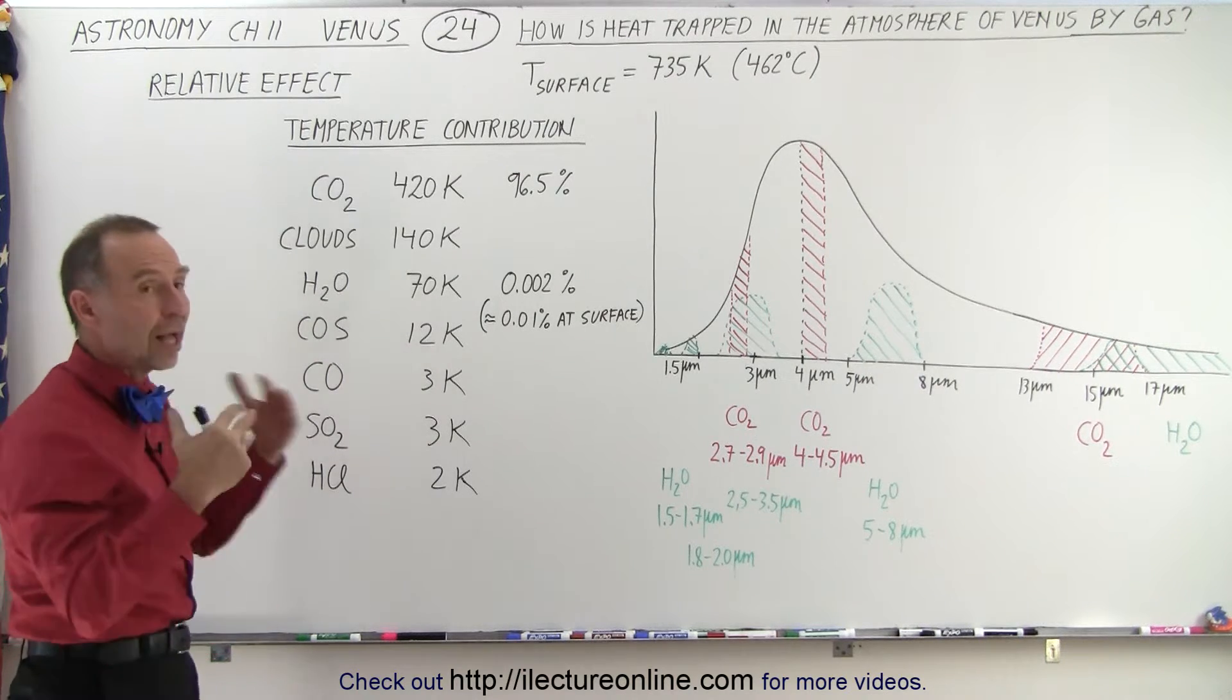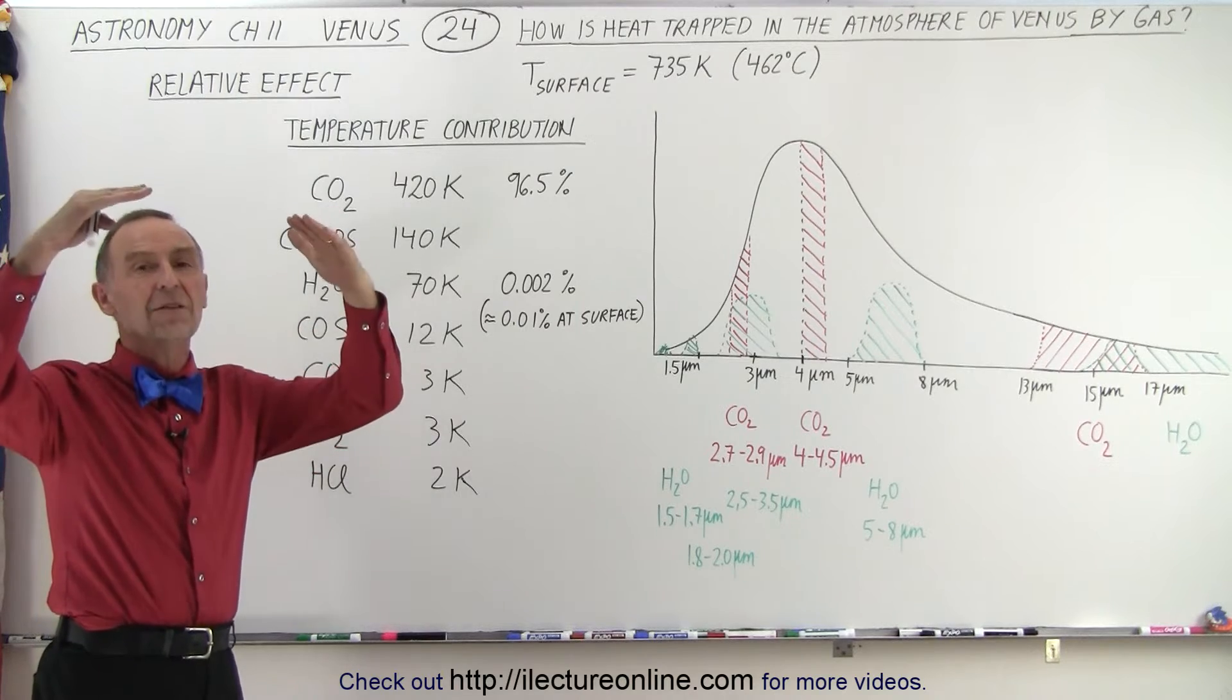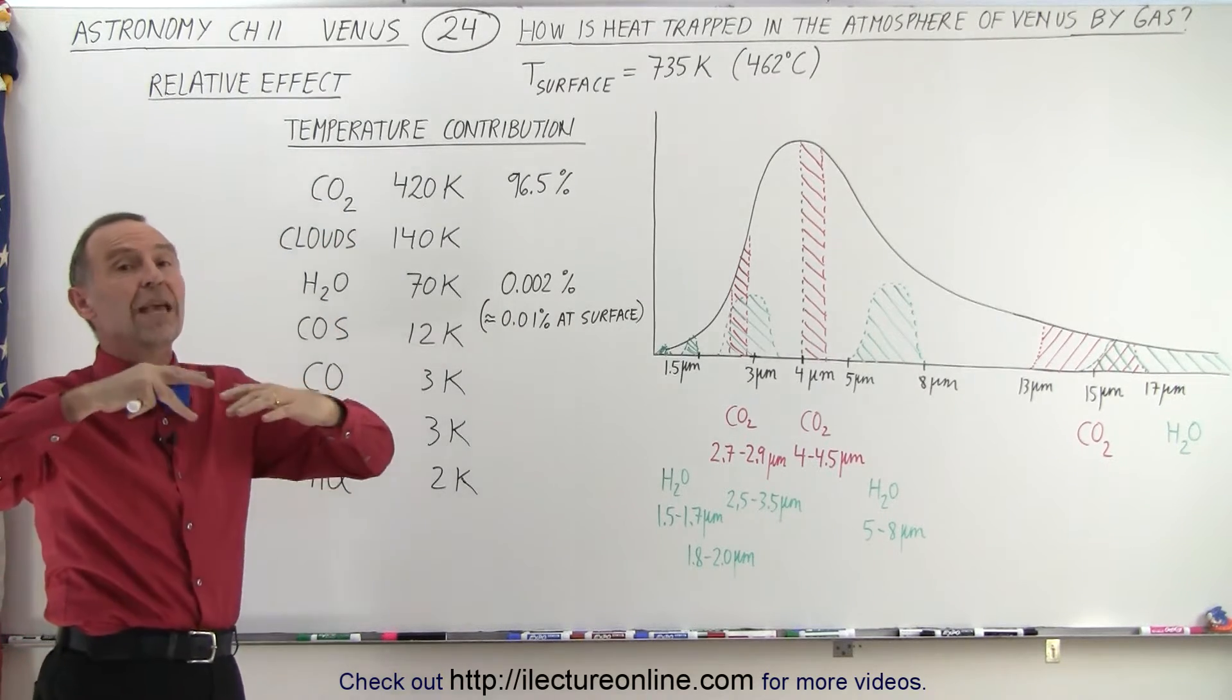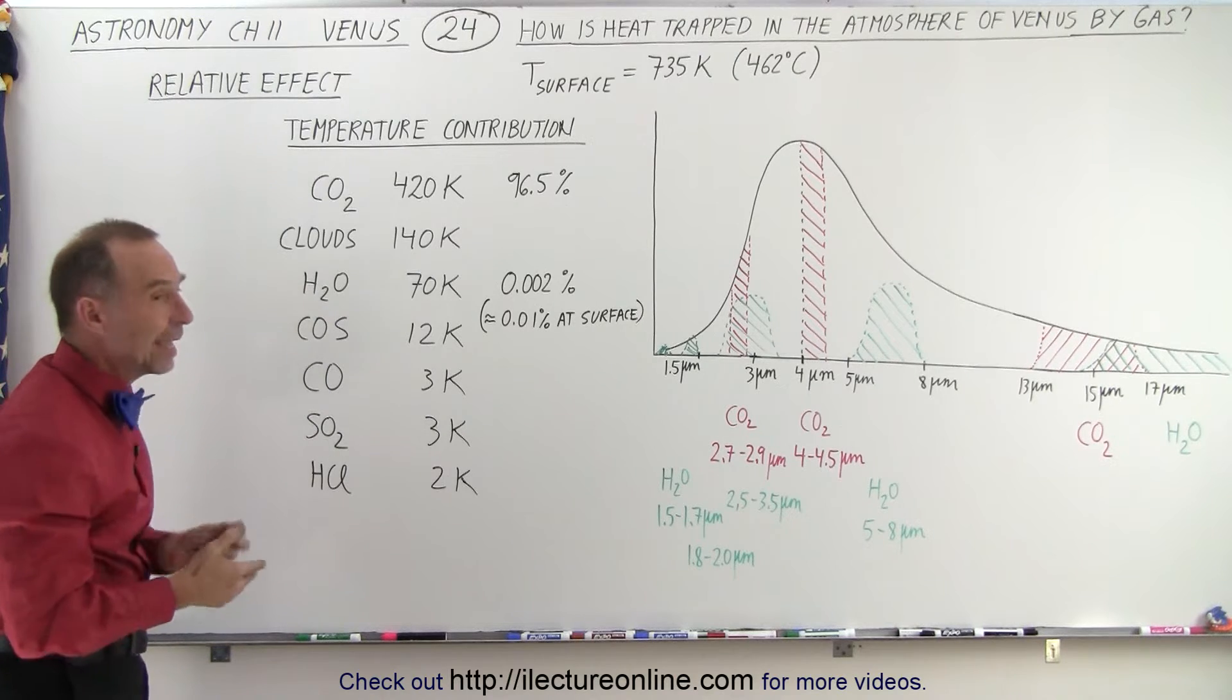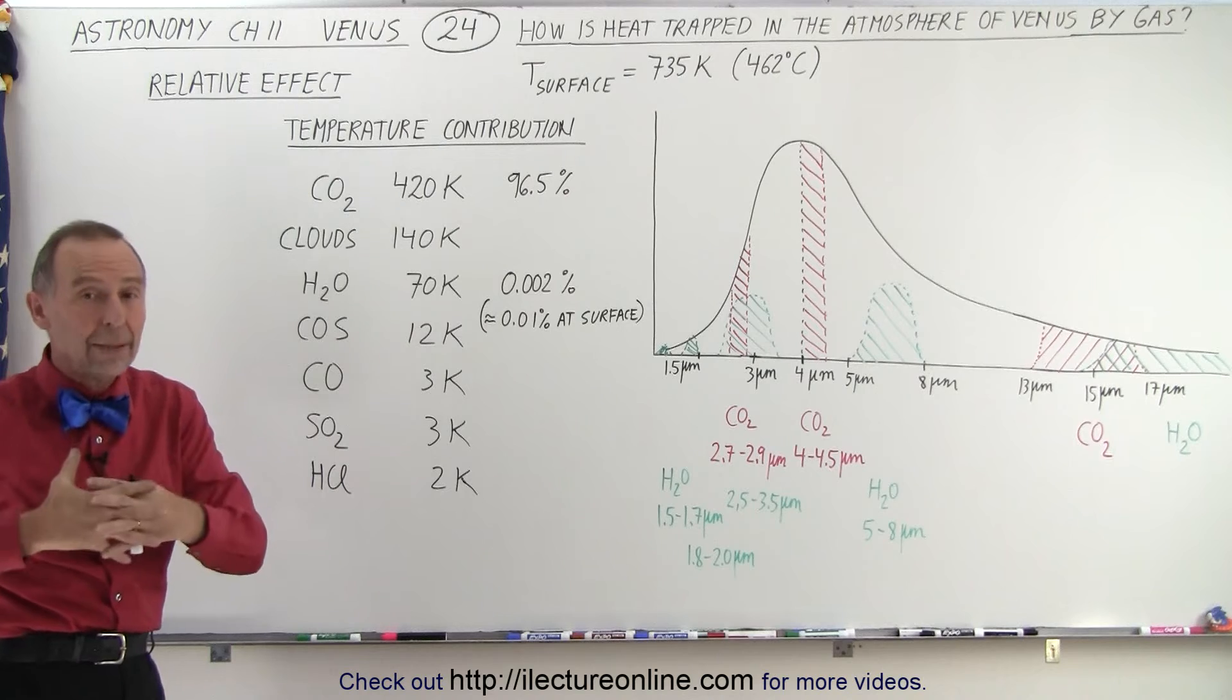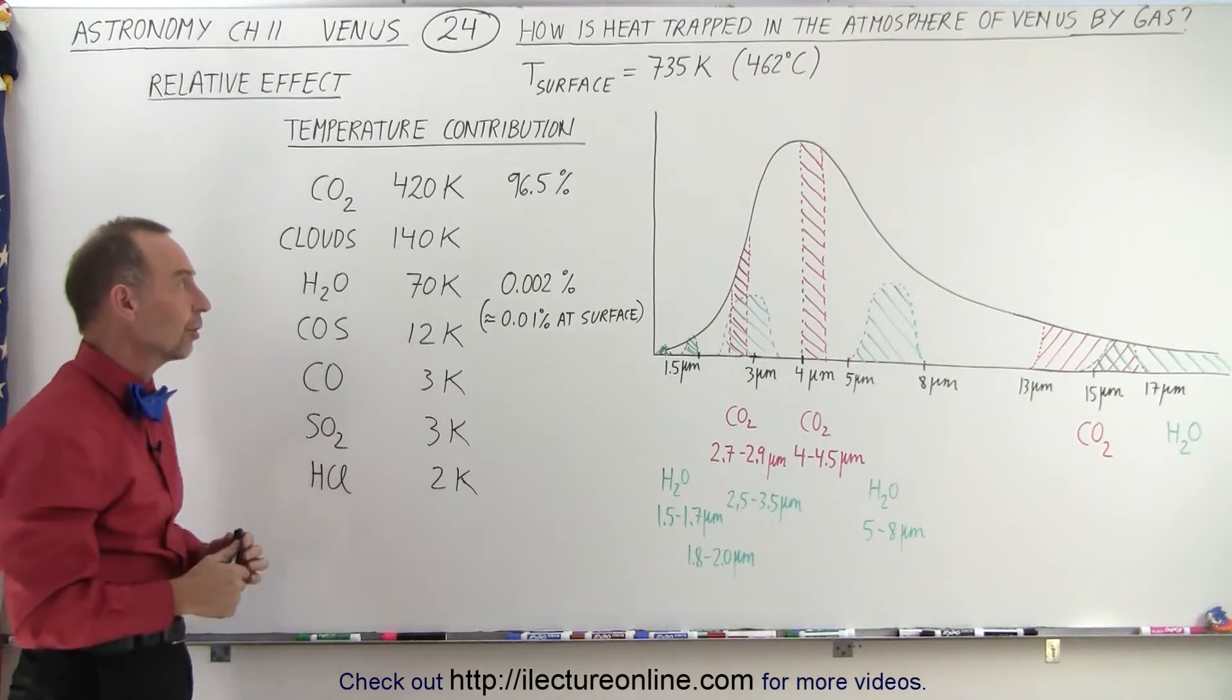Now, part of that is the cloud cover, that very thick cloud cover. Not only does it reflect heat or reflect sunlight back into space, it also prevents heat from escaping into space, which adds an additional layer that keeps the heat in. Notice that these are relative effects and that you can't just simply add them all together because there's overlap on Venus, just like there's overlap on the effect of the greenhouse gases on the surface of the Earth.